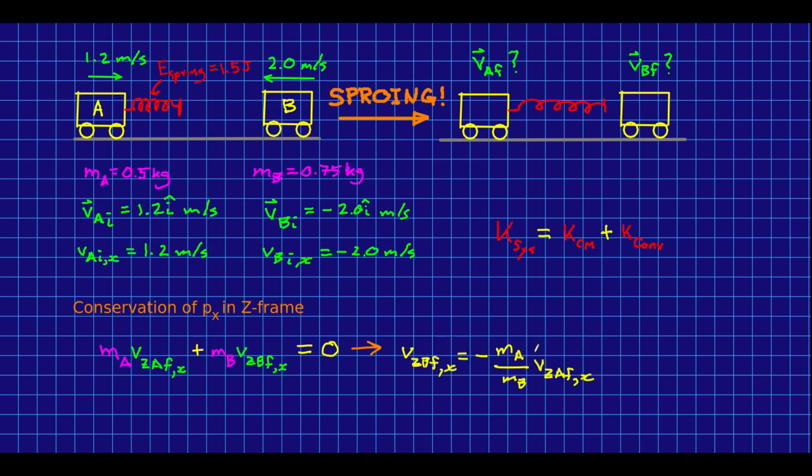And that allows us, as before, to eliminate one variable and write it in terms of the other. Now, the key realization we have here is that the kinetic energy of the center of mass does not change between the beginning and the end.